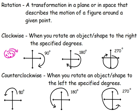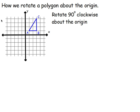So again, 90 degrees is one quadrant, 180 is two quadrants, 270 is three quadrants. Clockwise is to the right, counterclockwise is to the left. Rotation is just a transformation around a given point where we rotate an entire figure. So here it says: how can we rotate a polygon about the origin? We're going to rotate it 90 degrees clockwise about the origin.